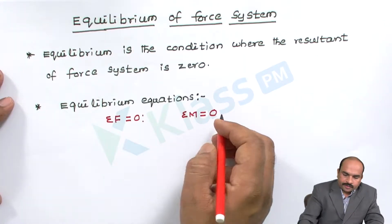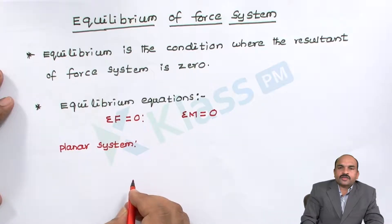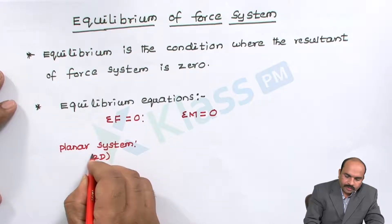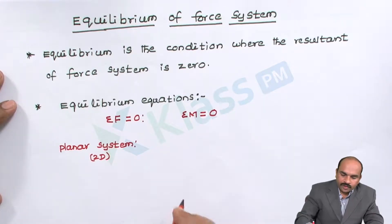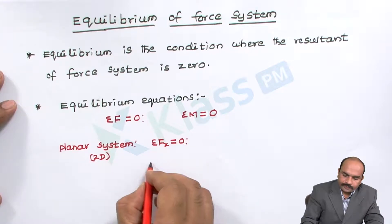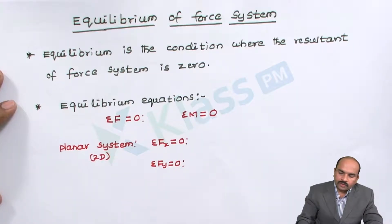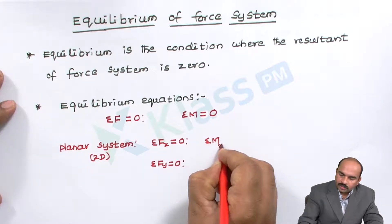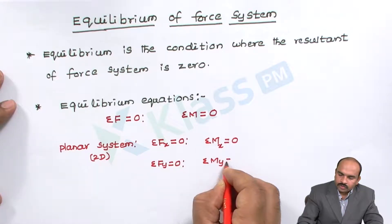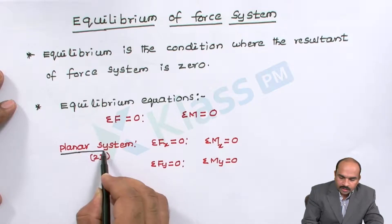Let us take a planar system. A planar system means it is a two-dimensional system where there are two axes, that is x and y. The equilibrium equations we can write are: sigma Fx equal to zero, then sigma Fy equal to zero. Similarly, we can also write sum of all the moments about the x-axis equal to zero, then sum of all the moments about the y-axis equal to zero. So these are the equilibrium equations for the planar system.